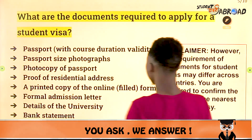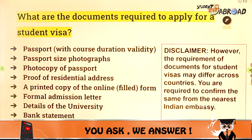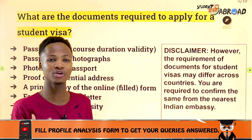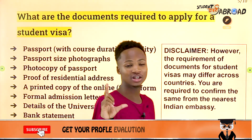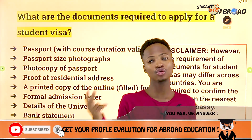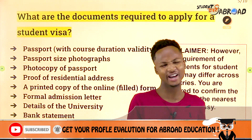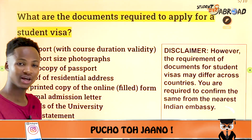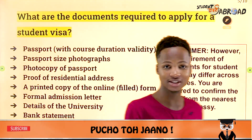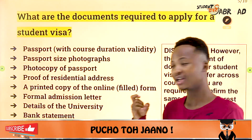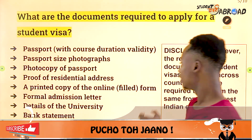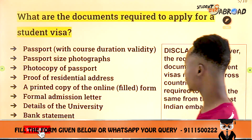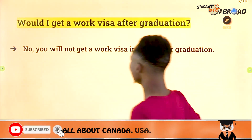The fourth question is: what are the documents required to apply for a student visa? You will need your international passport, your 10 plus 2 which is your 12th standard certificate, your birth certificate, your bank statement, your admission letter, your visa undertaking letter, details of the university, and a printed copy of the online application form mentioned earlier.